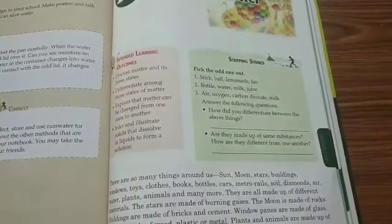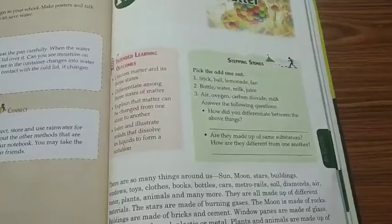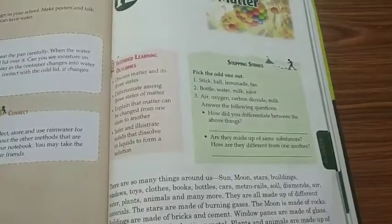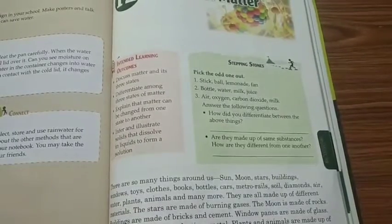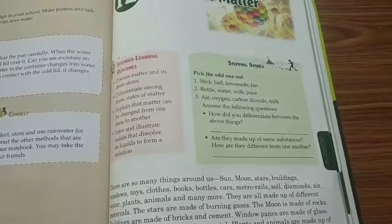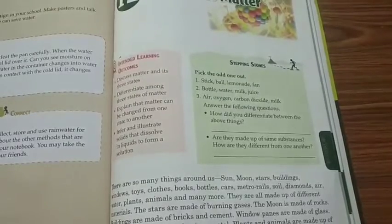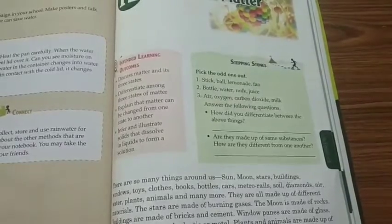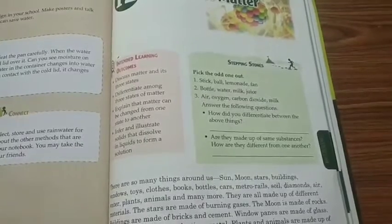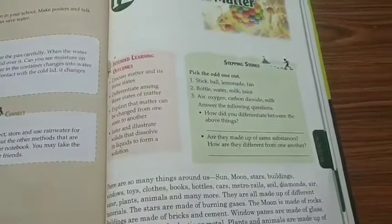There are so many things around us: sun, moon, stars, building, windows, toy, clothes, book, bottle, cars, motor railway, solid, diamonds, air, water, plant, animal and many more.